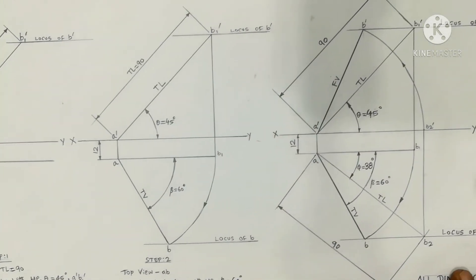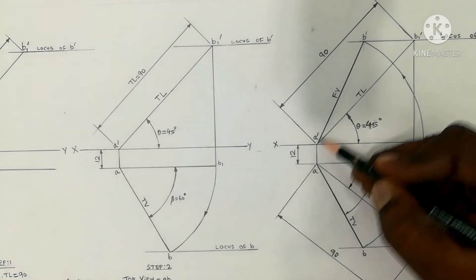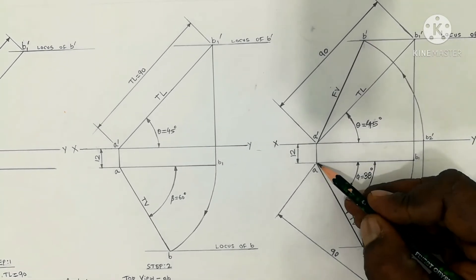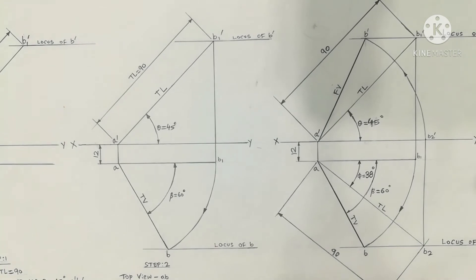So next is the final projections. A' and B' is the final front view, and AB is the final top view.